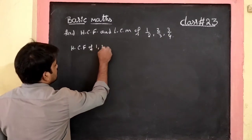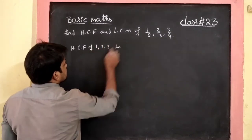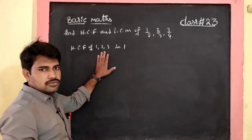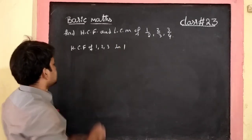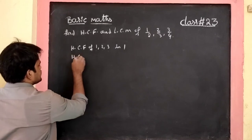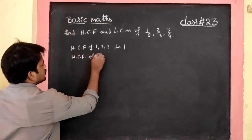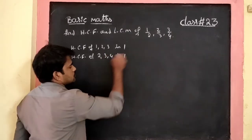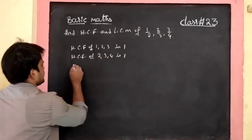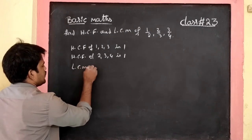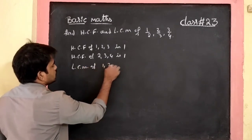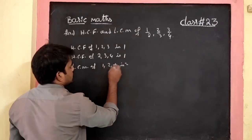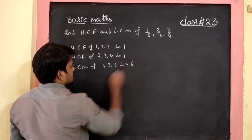HCF of numerators 1, 2, 3 is 1. Next, HCF of denominators 2, 3, 4 is also 1. Now, LCM of numerators 1, 2, 3 is 6.